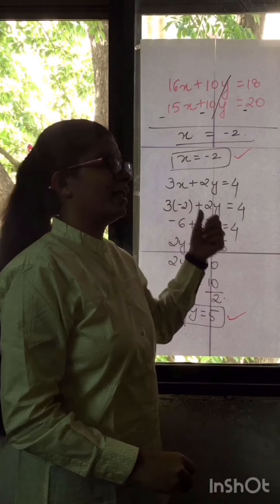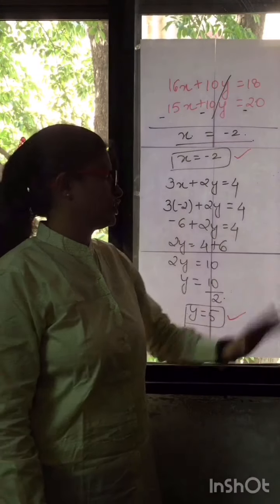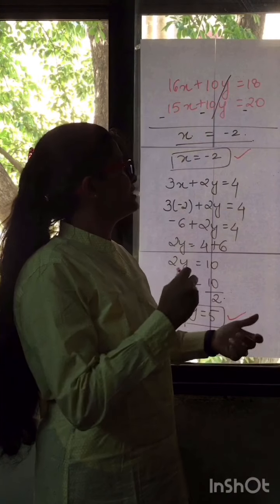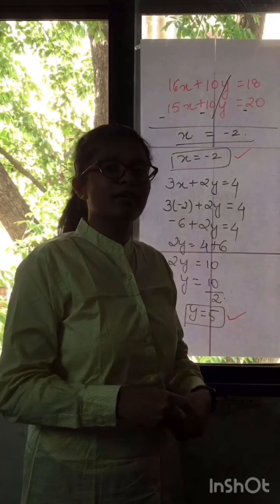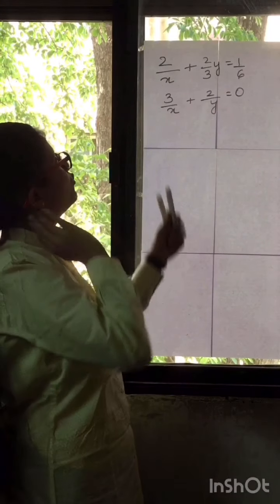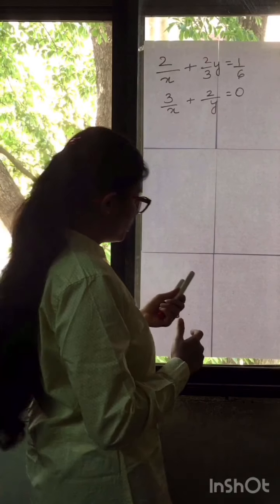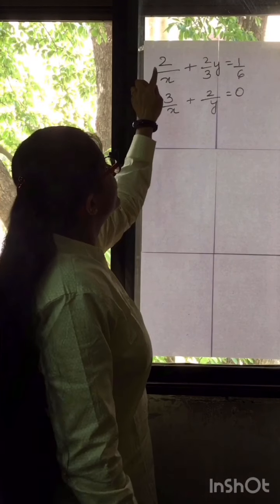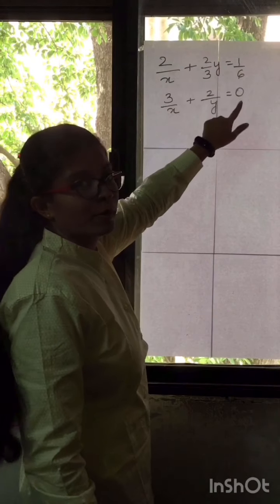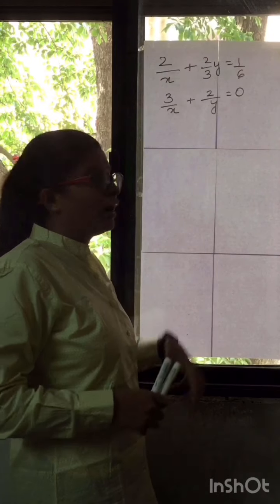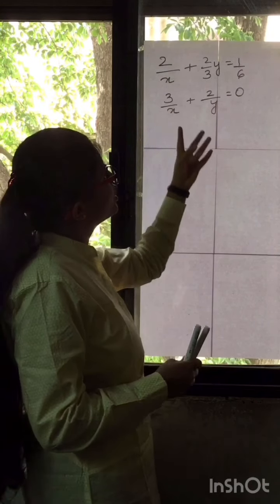So the values x equals minus 2 and y equals 5 have been calculated using the elimination method. I hope this is clear. Now let's proceed with a more difficult third sum. Sum 3 of the elimination method is a little different from the previous two.